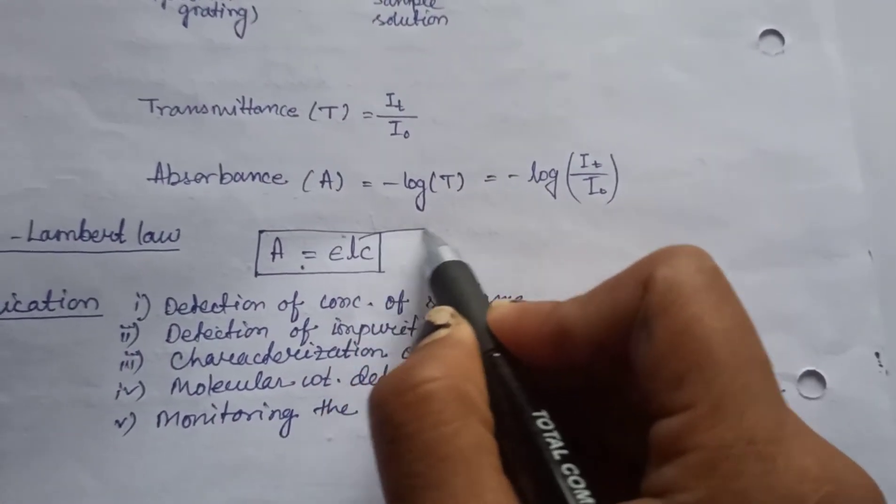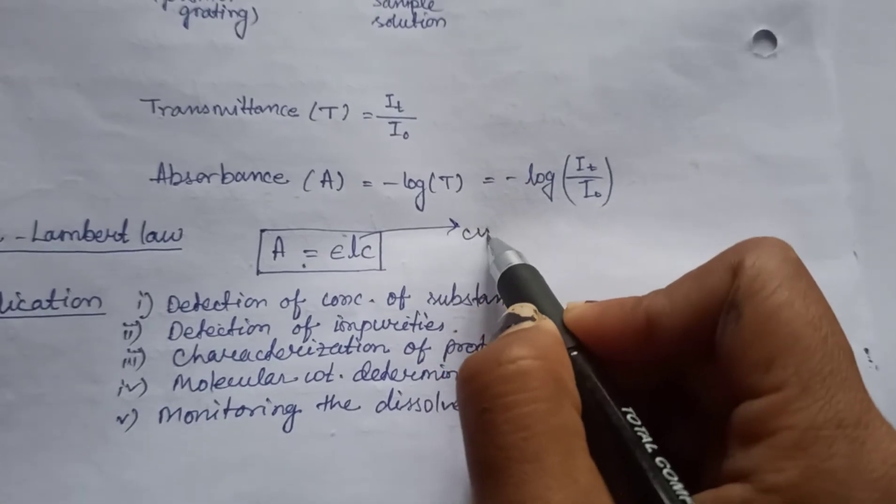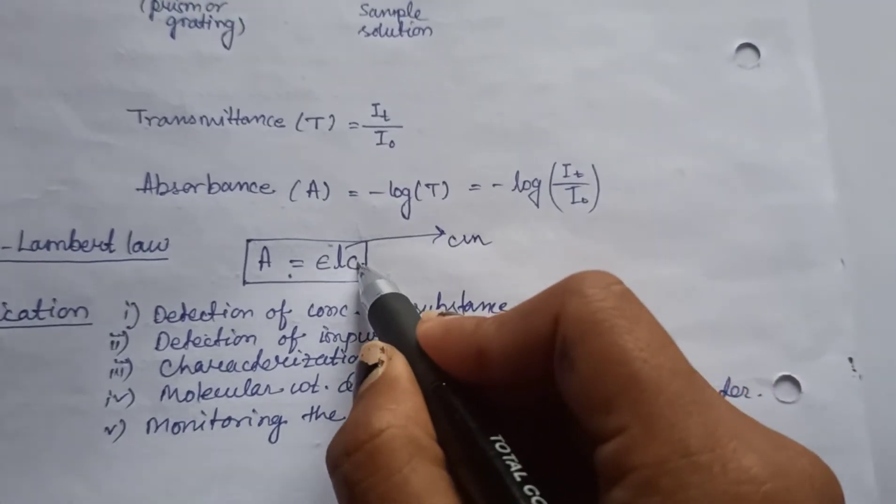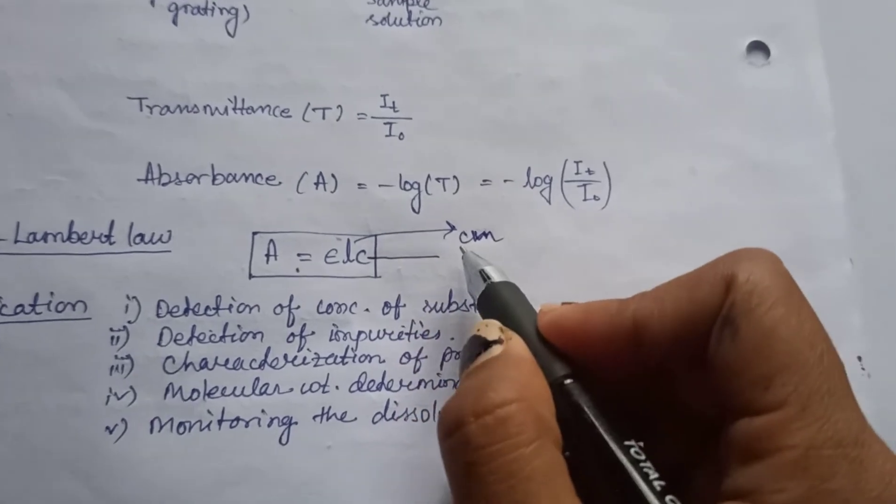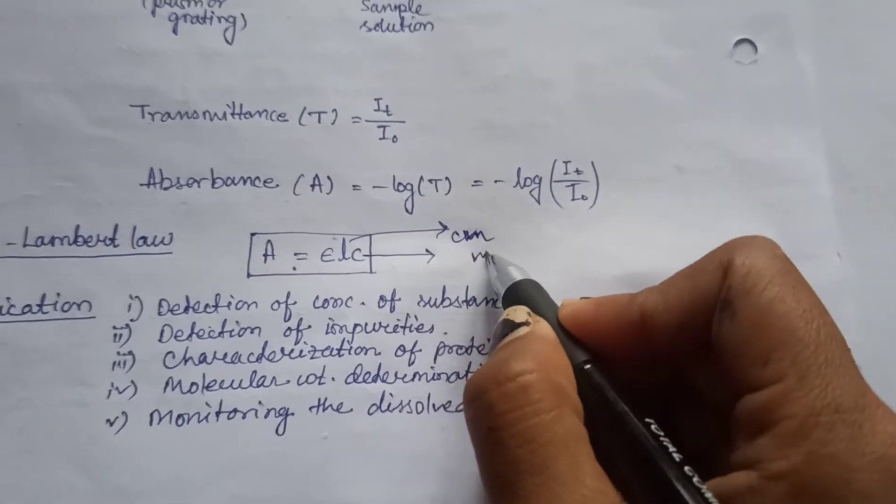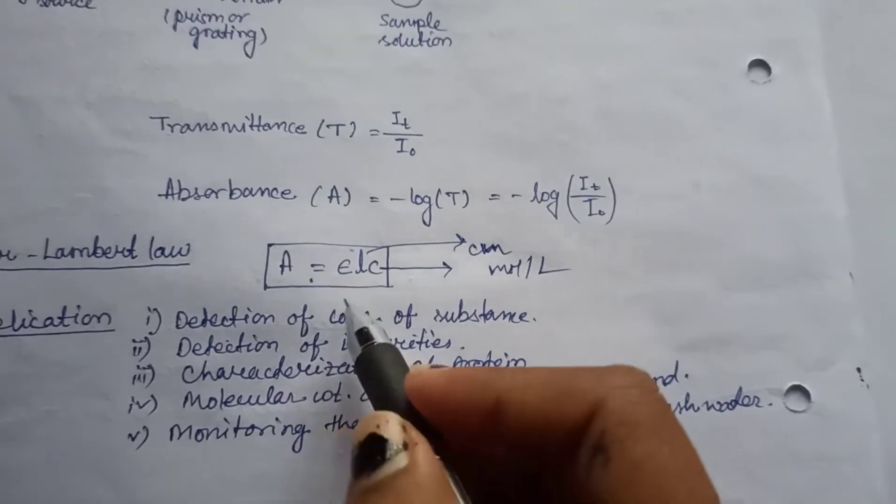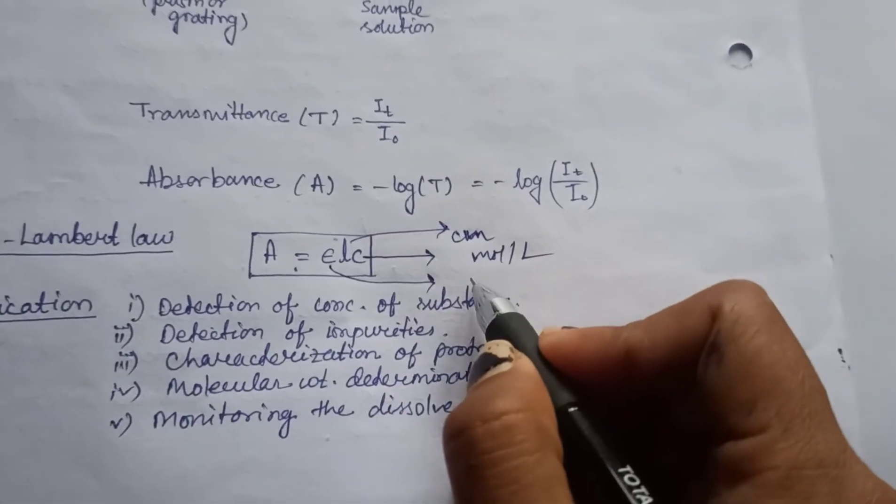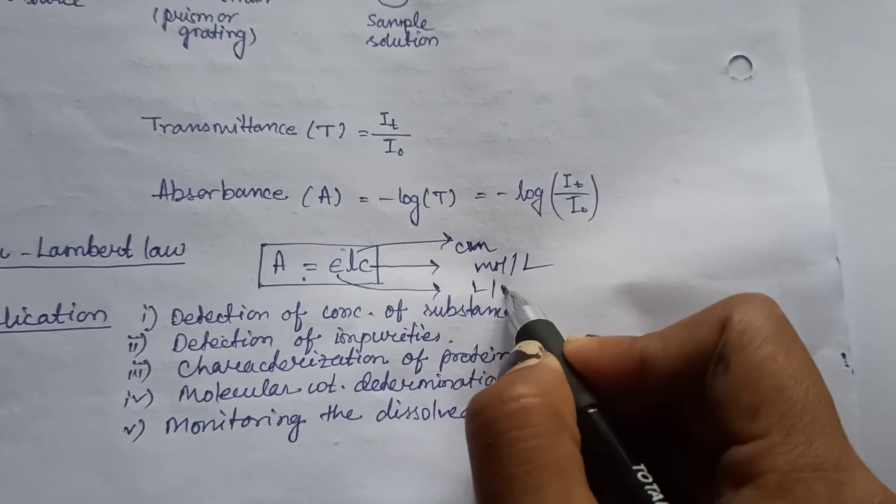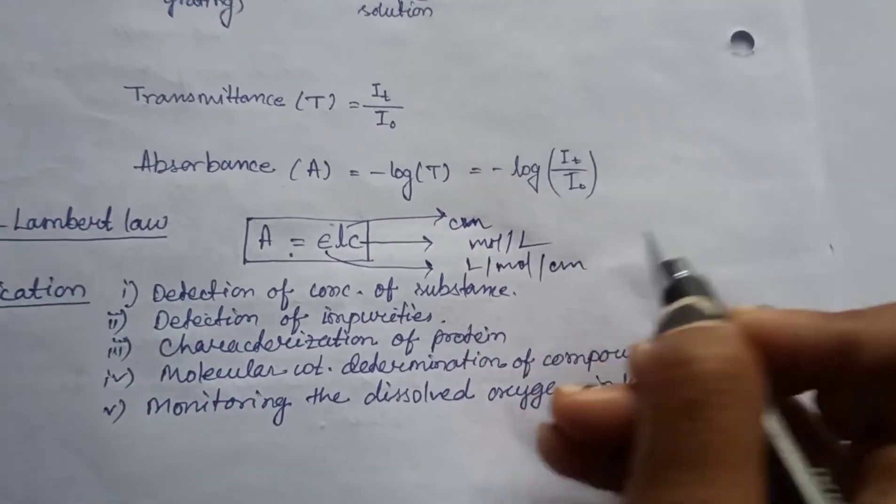Concentration has a unit of mole per liter, and epsilon has a unit of liter per mole per centimeter.